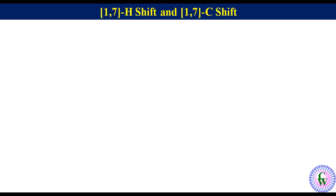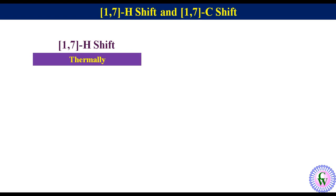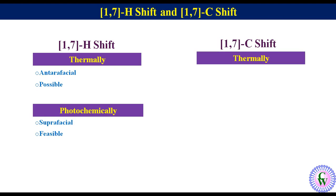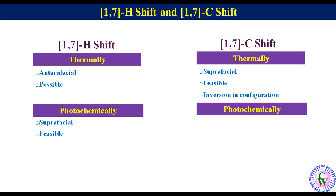We can derive the rules for 1,7 H Shift and 1,7 C Shift similar to the way we discussed for 1,3 Shift. To summarize: in 1,7 H Shift, under thermal condition it is antarafacial but possible because of flexibility of the system; under photochemical condition it is suprafacial and feasible. For 1,7 C Shift, under thermal condition it is suprafacial and feasible with inversion in configuration of the migrating group; while under photochemical condition it is suprafacial and feasible with retention in configuration.